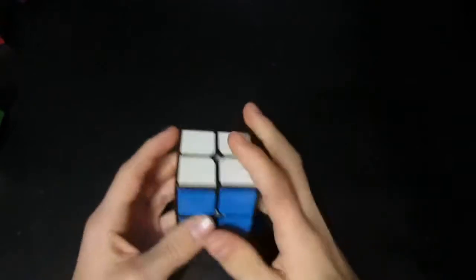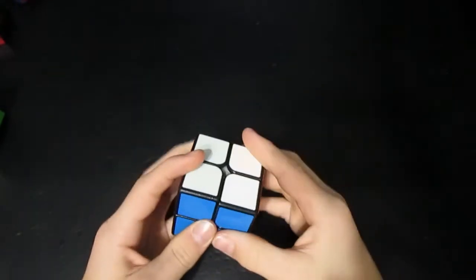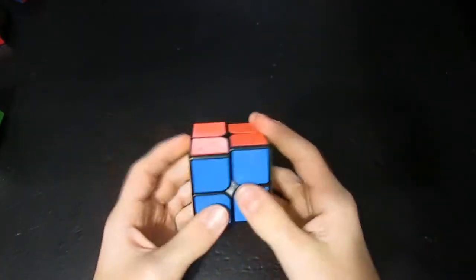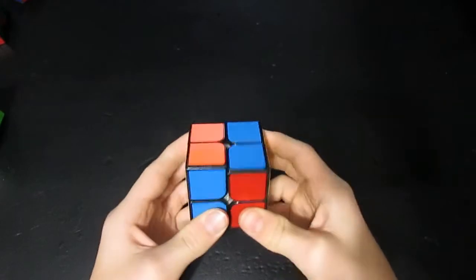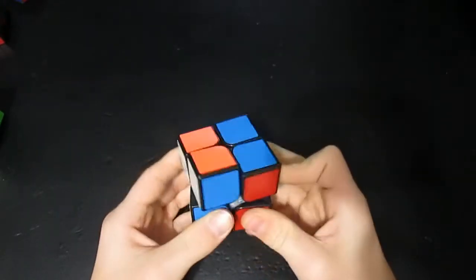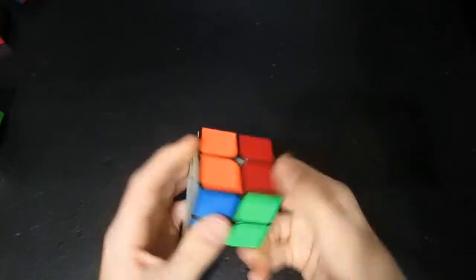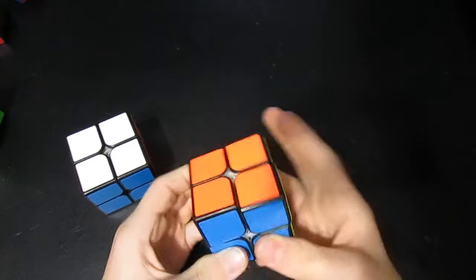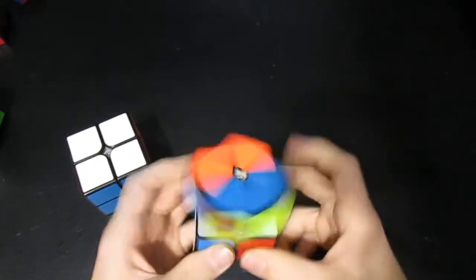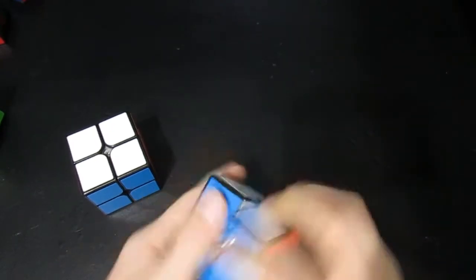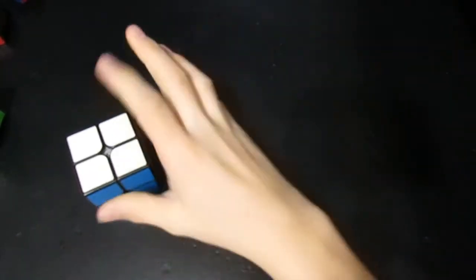First off is the type of cube that you want to use. Try to have no logos on it, because sometimes those can get in the way, and you can also cheat off those. Also try to choose a quiet cube, because you don't want a loud sound when you're solving. That can make you forget. It's hard to concentrate when you have a loud cube, but it's much better when you have a quiet one.